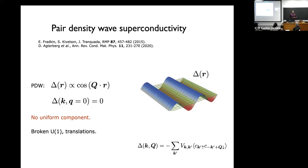The Larkin-Ovchinnikov state also has no q equals zero component, but in terms of mechanism it usually came from taking a uniform superconductor, polarizing it, and then having both uniform and non-uniform components. Anyway, these are nomenclature issues — we now call these things pair density waves.